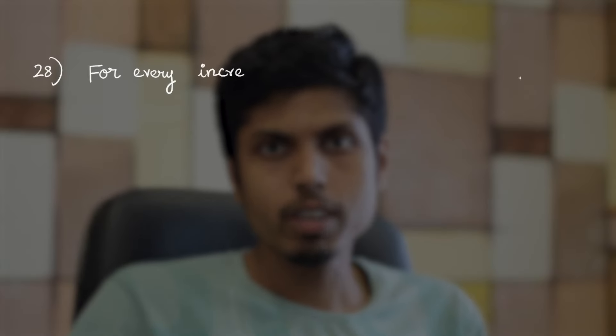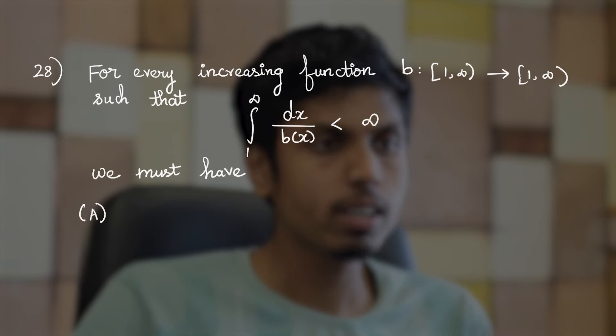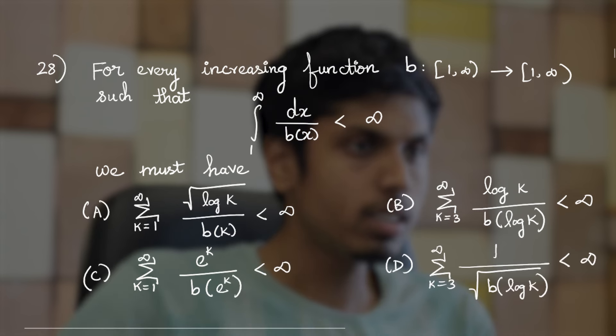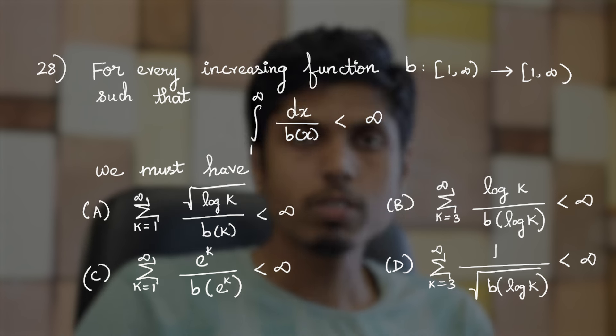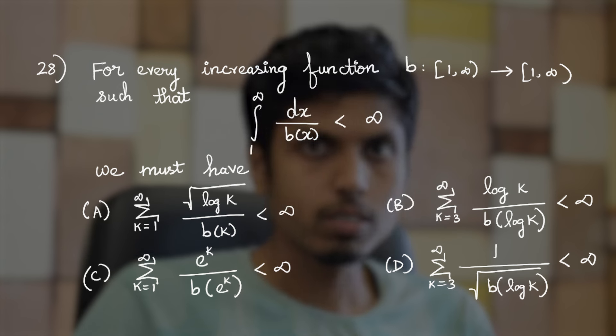So today, we are going to discuss this problem which states that for every increasing function b from [1,∞) to [1,∞) such that integral dx/b(x) from 1 to infinity converges. This symbol less than infinity means that it converges. Now, we are asked to find which one of the following options are correct. It's a single correct option, so one option is exactly correct.